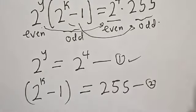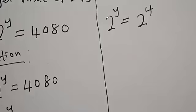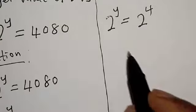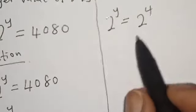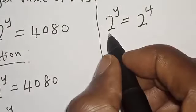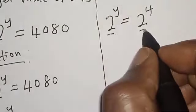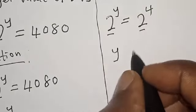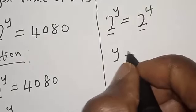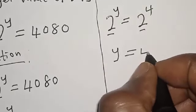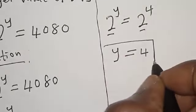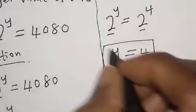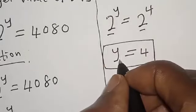From equation 1: 2 raised to power y is equal to 2 raised to power 4. Since they have the same base, y is equal to 4. That is the value of y.